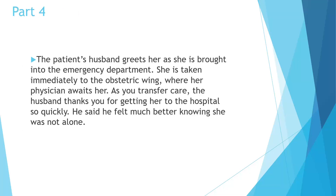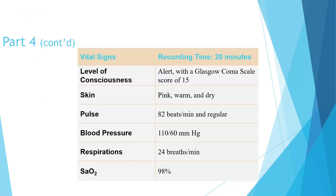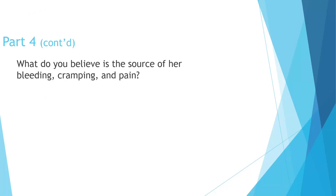As you get to the hospital, the husband greets you and she's taken to the OB wing where her physician awaits her. Vital signs on arrival: alert, GCS of 15, skin warm and dry, pulse rate 82, blood pressure 110 over 60 — nothing's really changed. So what could be her source of bleeding, cramping and pain? For differential diagnosis we want to include: miscarriage, a ruptured ovarian cyst, trauma, threatened abortion, intercourse causing spotting, and including the potential for ectopic pregnancy. Several different things to consider when looking at these differentials.